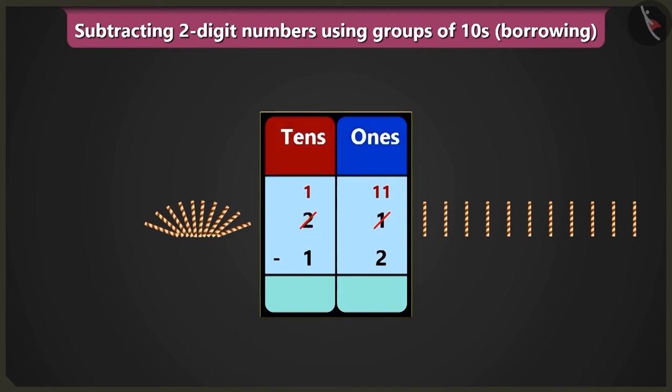if we will subtract two ones from eleven, then we will be left with one, two, three, four, five, six, seven, eight and nine in the place of ones. Now look,